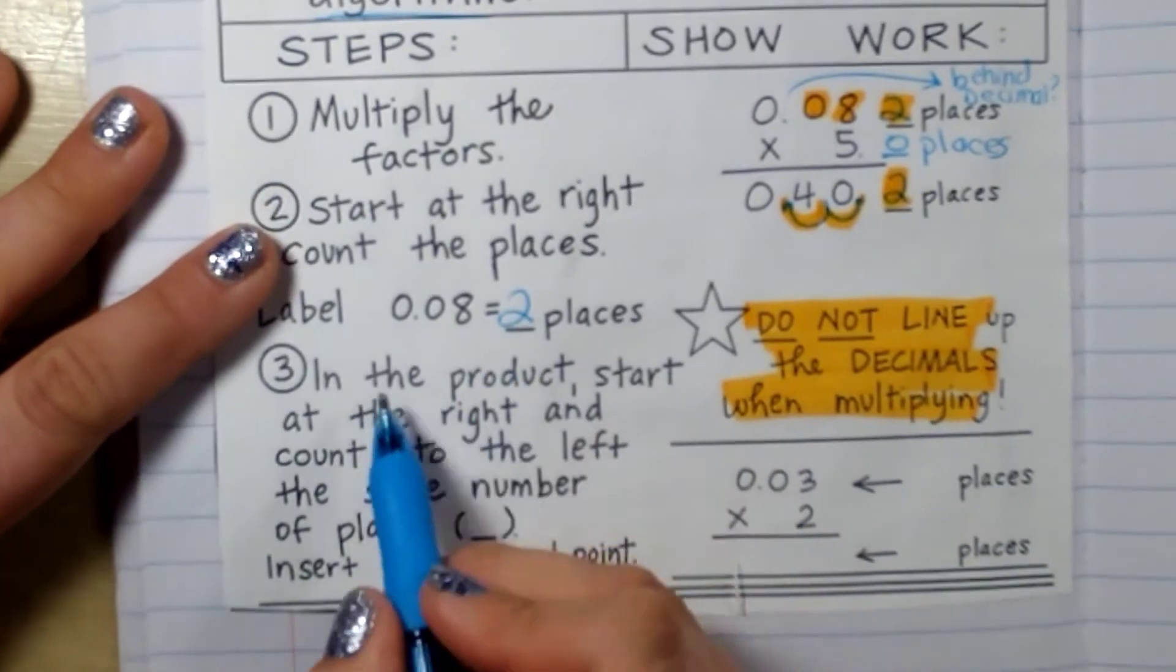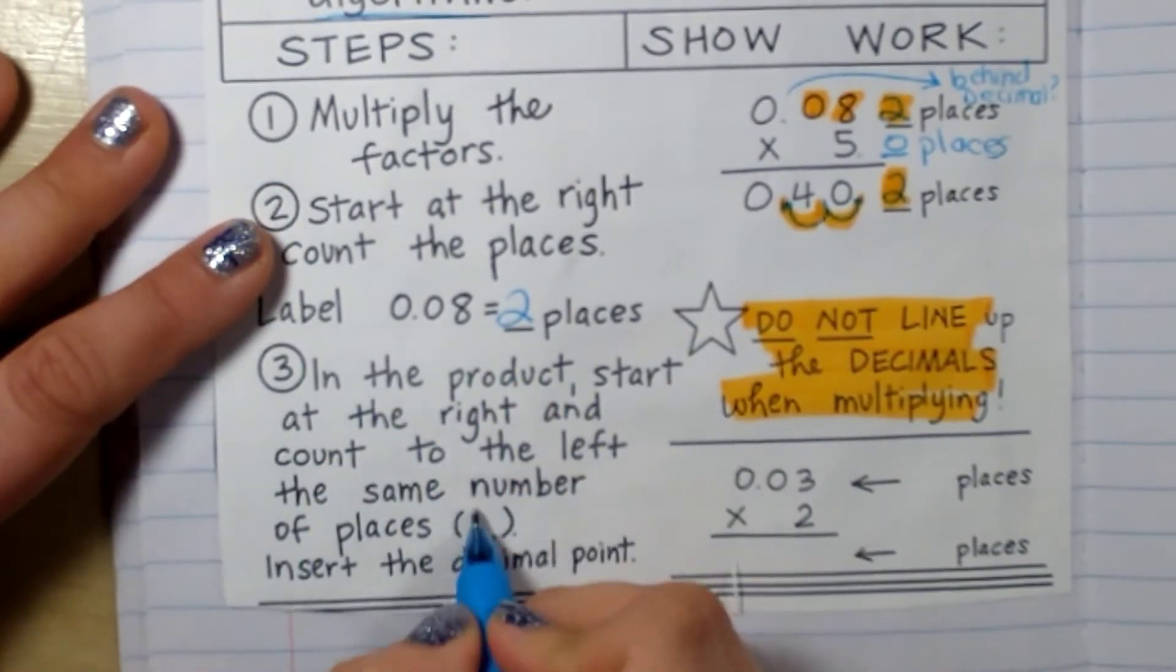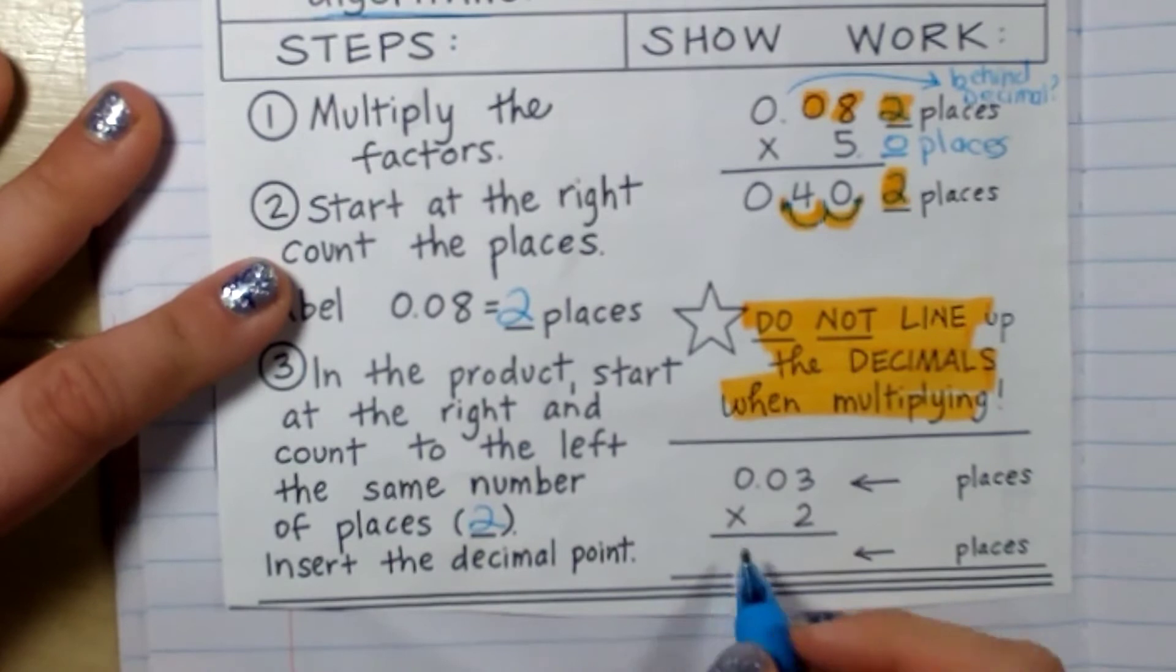So that's what it says here. In the product, start at the right and count to the left the same number of places and insert the decimal point.